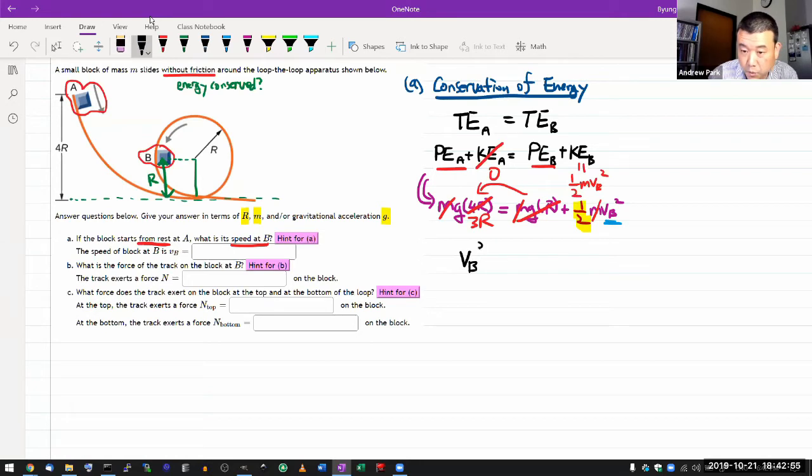VB squared, that's the right hand side, is equal to two times what was on the left hand side. So that's two times three, 6gR. To get rid of the square, I take the square root of both sides. So that's it.